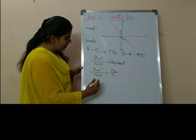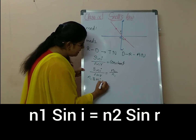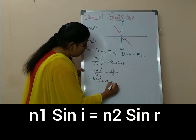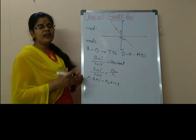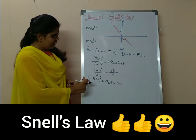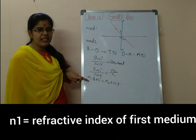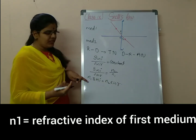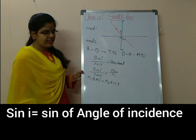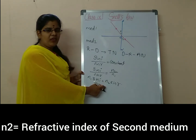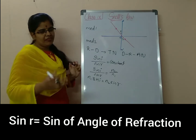So if you take the cross multiplication, then we get n1 sin i equals n2 sin r. This is Snell's law, where n1 is the refractive index of the first medium, sin i is the sine of the angle of incidence, n2 is the refractive index of the second medium, and sin r is the sine of the angle of refraction.